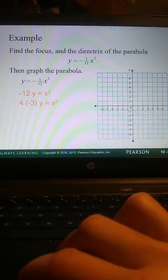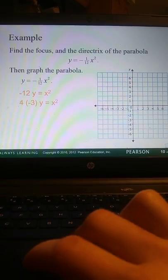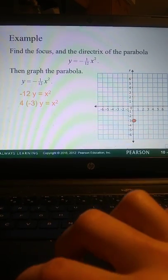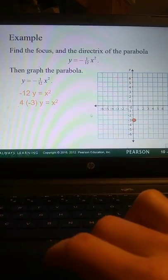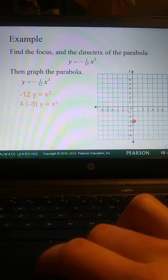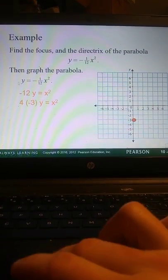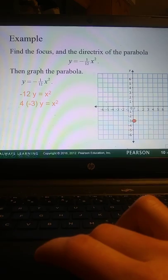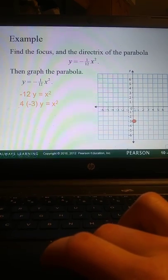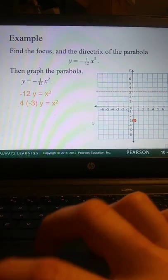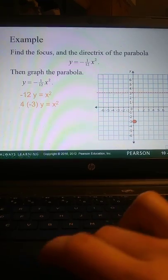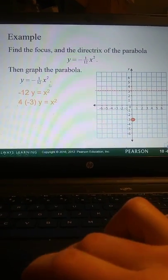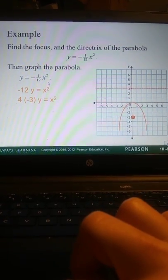And we know that the focus is going to be 3 away from the actual vertex. So here is our focus. So we know it's symmetric about Y, so we know it's going to fall on Y. Our vertex will be at 0, 0. So our focus is down at negative 3. Our directrix is up at positive 3. And then we draw our parabola.